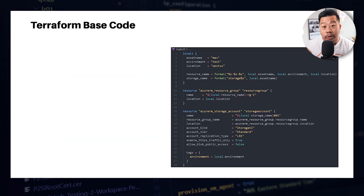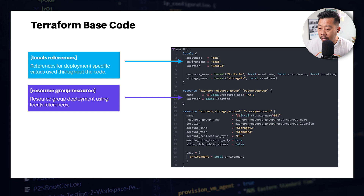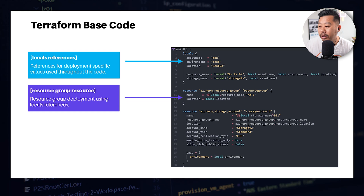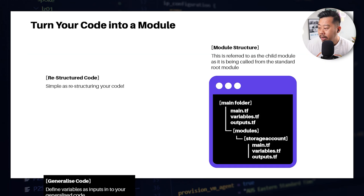Let's break down what the code looks like — this is what I'll show in the demo. I've got a standard locals definition at the top, which is where I provide my unique values for the environment. Then I've got resource names, like storage name, where I put locals together to formulate resource names. Then I'm deploying a resource group as the base code, using local references to create the resource name and location. And then there's a storage account using references from the resource group above, with predefined values — I want HTTPS to be true and public access to be false.